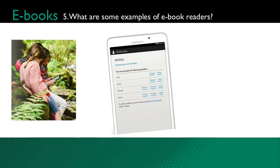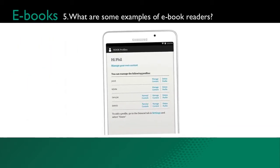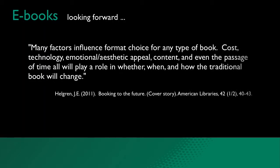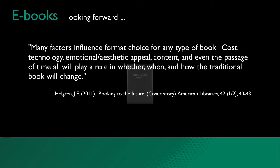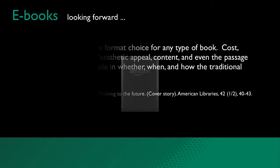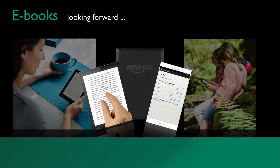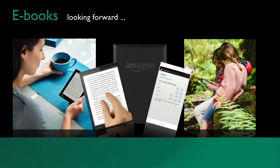Some e-books can be shared with friends or family, much as you would a printed copy of a traditional book. Opinions about e-book readers are still varied. Many factors influence format choice for any type of book — cost, technology, emotional aesthetic appeal, content, and even the passage of time will all play a role in whether, when, and how the traditional book will change. As these changes occur, libraries are continually learning new ways of including e-book readers in the services they provide and are finding innovative ways to include e-books in library collections for patrons to use.